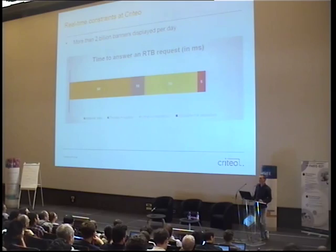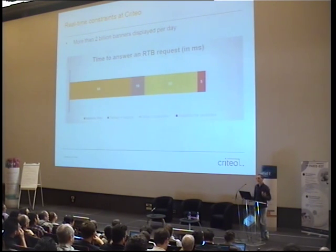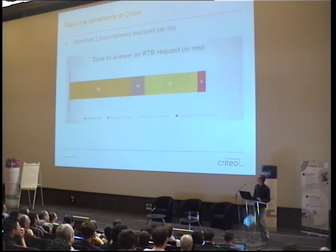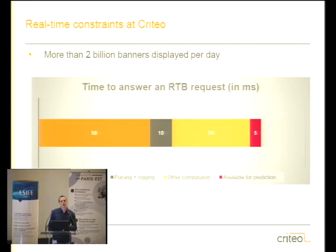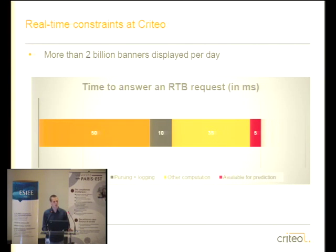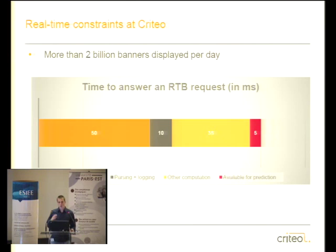That 50 microseconds is basically the major difference from what Yann presented. He showed a picture of the visual cortex — the time between sensing a signal and reacting is about 150 milliseconds, which is about 3,000 times slower than what we have to do. Visual recognition tasks run at maybe 20 to 60 frames per second, so on the order of 30 to 50 milliseconds per prediction — again about a thousand times slower than what we actually need.